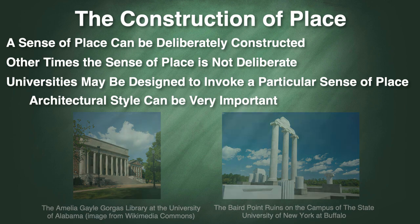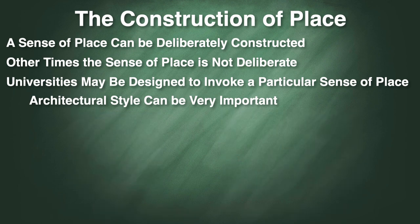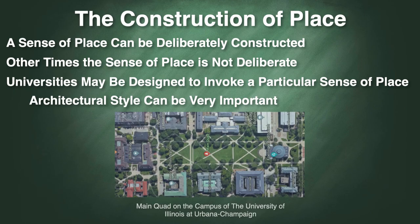We can also consider the ways that universities use space. It's a common feature of college campuses to have a large open quad area for people to play and hang out in, with those large Greek-inspired buildings around it near the very center of the campus. You can often also see a football field, a track, and other sorts of sports facilities around the perimeter. So if you were looking at an aerial photo or a satellite image of an area and you begin to see these features, you would probably know that you're looking at a university.